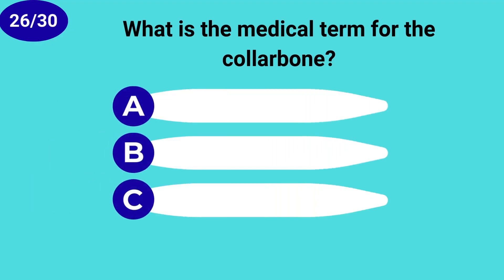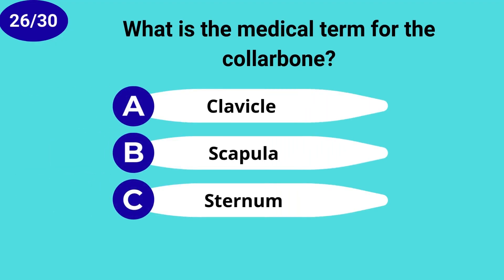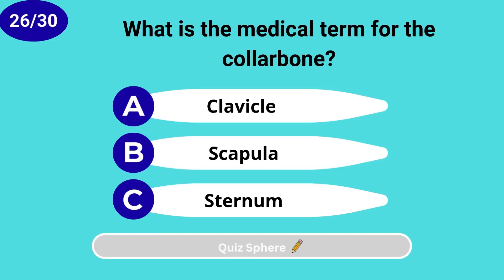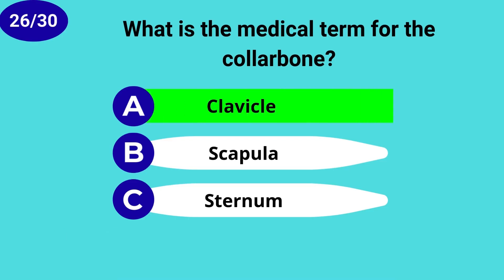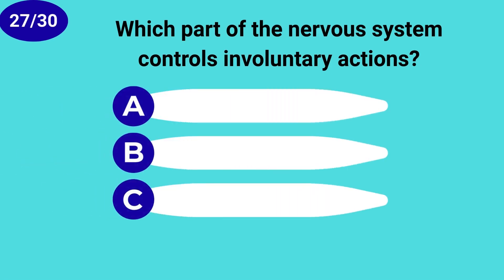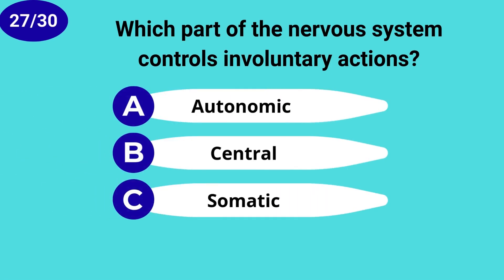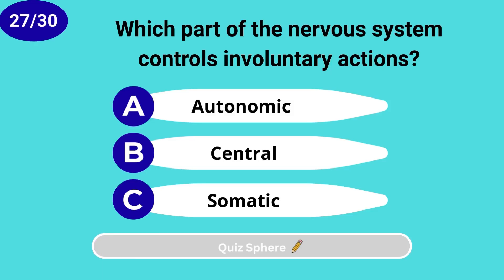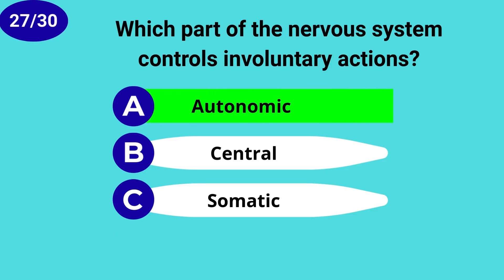What is the medical term for the collarbone? Clavicle. Which part of the nervous system controls involuntary actions? Autonomic.